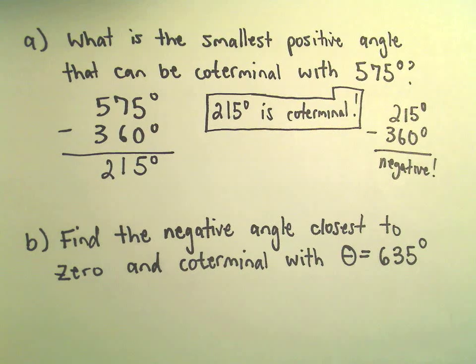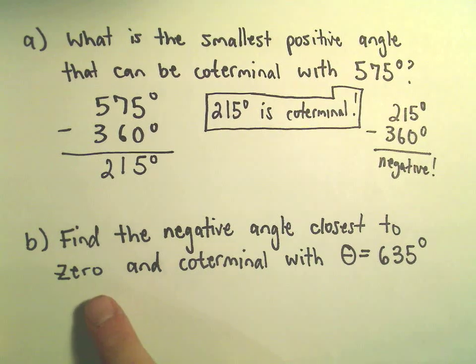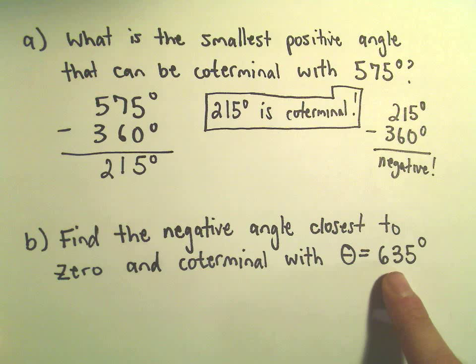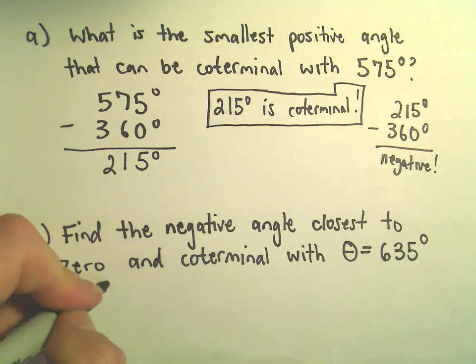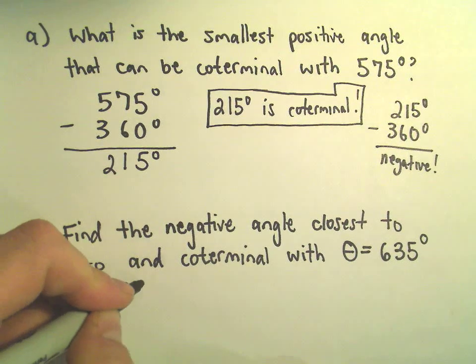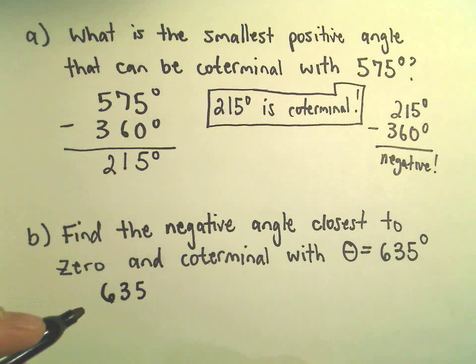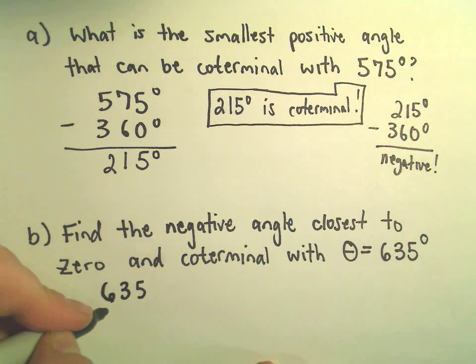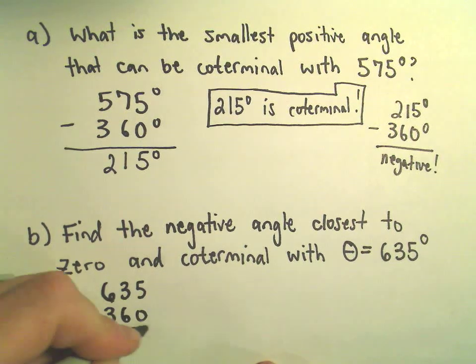Part B here, we're going to find the negative angle closest to 0, that's coterminal with 635. And we're just going to do the same thing. So if we do 635 and we subtract away 360,